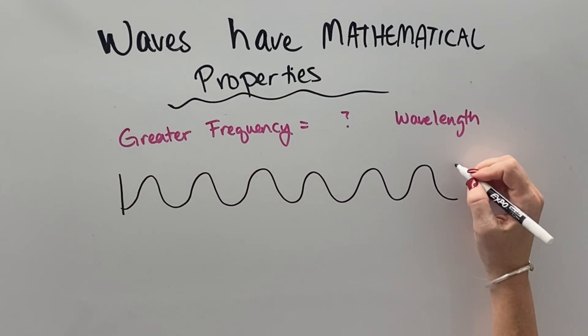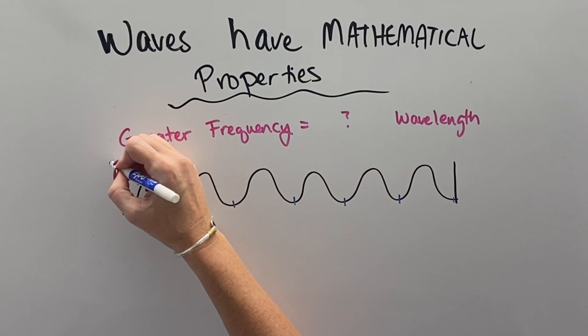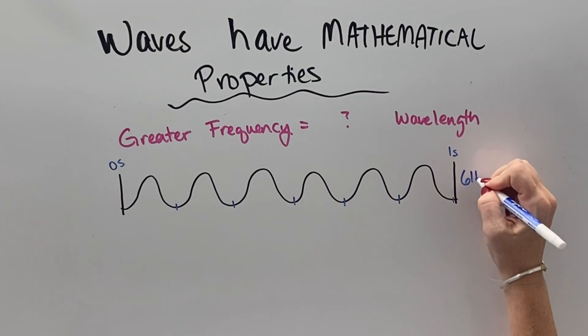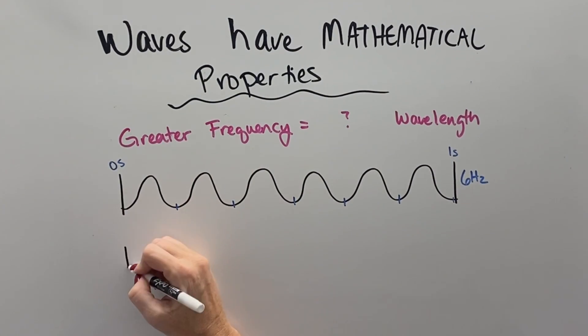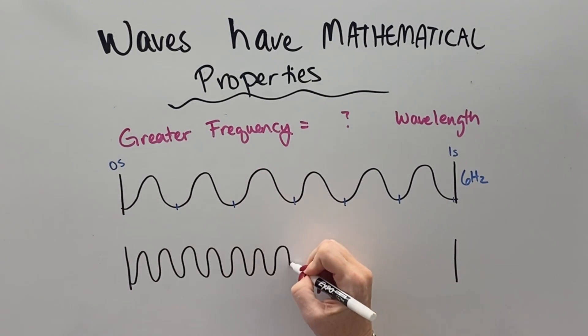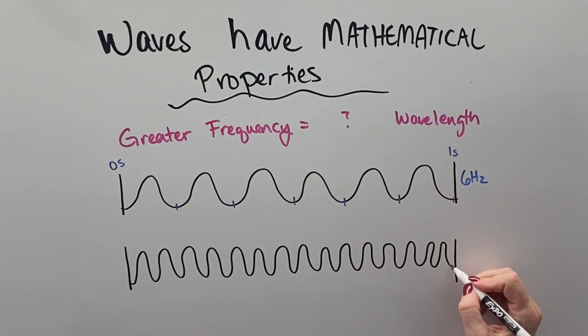The next relationship that we need to understand is how frequency affects wavelength. So if we look here at the number of waves that we have in one second at the top, we can see that there are six hertz or six full waves in one second. If we count this one,